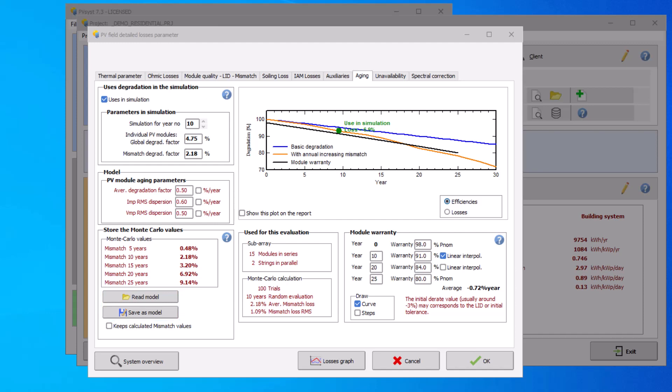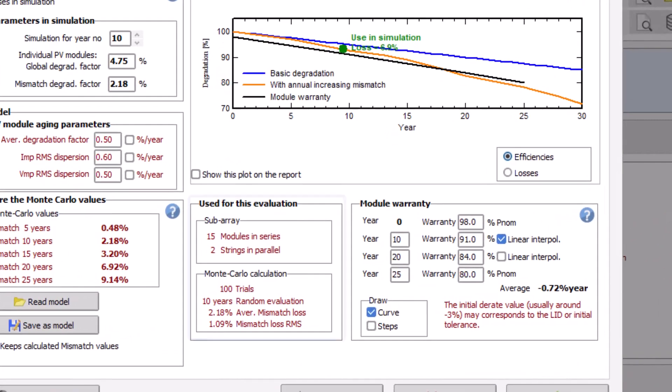In the used for this evaluation section, information on the strings configuration of the variant and the Monte Carlo calculation can be found. In this variant, the sub-array consists of 15 modules in series and two strings in parallel.